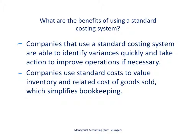There are two primary benefits of using a standard costing system. First, companies are able to identify variances fairly quickly. If we make a purchase and that cost is higher than the standard, we've identified that as soon as we make the purchase, and we can take action — maybe to negotiate better prices with vendors or to adjust standards accordingly. Second, companies use standard costs to value inventory and cost of goods sold, which simplifies bookkeeping rather than using actual costs that fluctuate over the period.